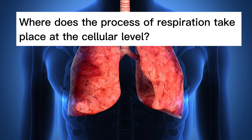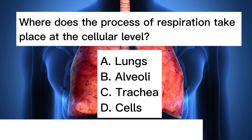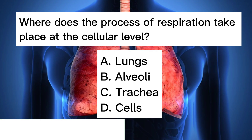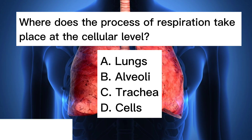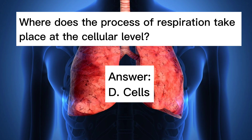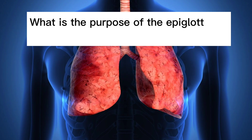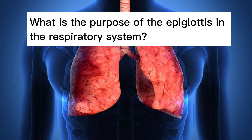Where does the process of respiration take place at the cellular level? A. Lungs. B. Alveoli. C. Trachea. D. Cells. Answer: D. Cells.